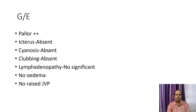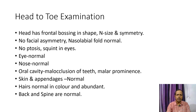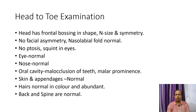General examination: Pallor is present. Icterus, cyanosis, and clubbing are absent. There is no significant lymphadenopathy, no edema, and no raised JVP. Head-to-toe examination: Head has a normal size and symmetry with a bossed shape. No facial asymmetry; nasolabial folds are normal. No ptosis or squint in eyes. Nose is normal. Oral cavity: there is malocclusion of teeth and malar prominence. Skin and appendages are normal. Hair is normal in color and abundance. Back and spine are normal.